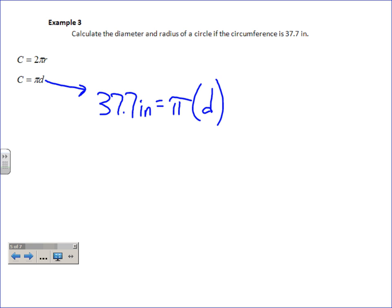37.7 inches equals pi times diameter, so this time the variable is not by itself right at the beginning. What you have to do is get it by itself. Some people look at pi as a variable, but it's not. It's just that number that's on your calculator, 3.14 that keeps on going.